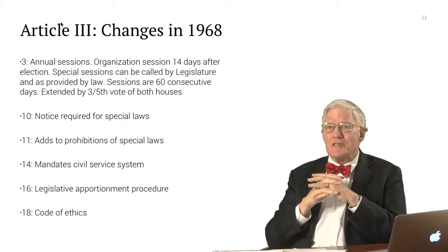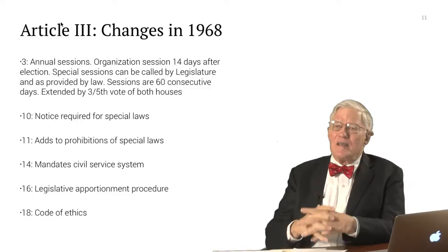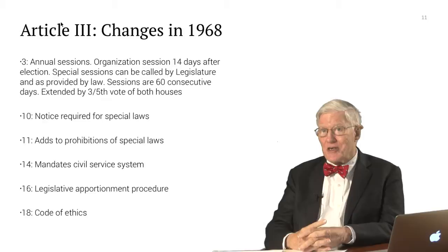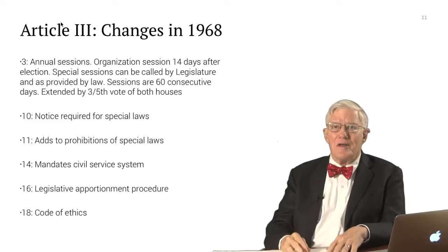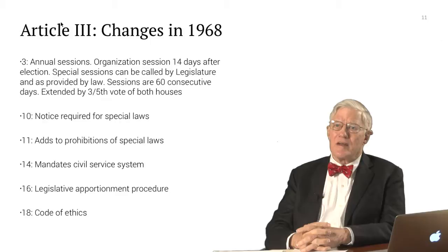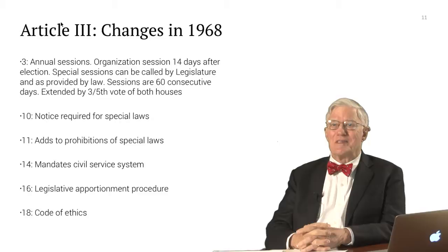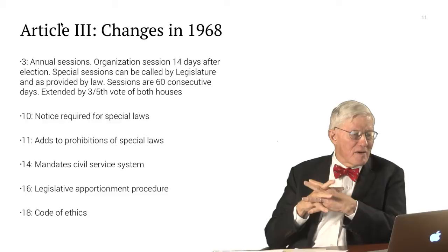Article 3 has annual sessions — this is a big change. The Constitution of 1885 said that the legislature would meet 60 days every two years. Some wag said that the drafters of the 1885 Constitution had made a terrible mistake — what they meant to say was that the legislature would meet two days every 60 years. But in effect it met every other year. The 1968 revision has the legislature meeting every year, so annual sessions mandated by the Constitution for the first time.